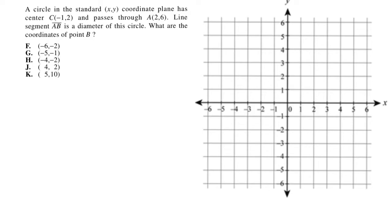So it tells me the center of my circle is at the point negative 1, 2. So if I plotted that center, that puts me here and again that is point C. We know there's a point A on the circle at 2, 6. So I go to 2, 6, I plot that point. I know that this point is on the circle.